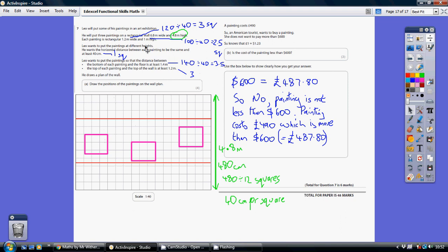Now other things we're told, they've got to be at different heights. So I've made sure they're all at different heights. And then we're also told the horizontal distance between each painting is to be the same. And at least 40 centimetres, which is one square. So the horizontal distance, the distance across has got to be the same.